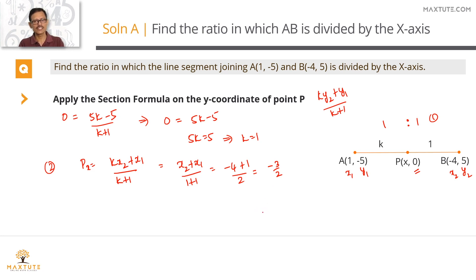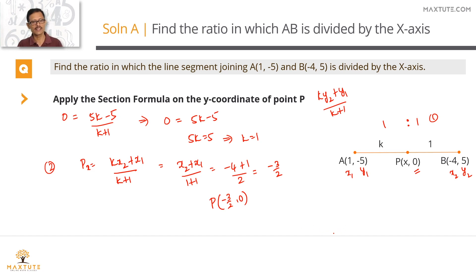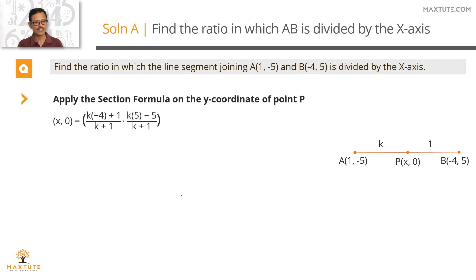Once we have the x-coordinate, the coordinates of point P are (-3/2, 0). So part two is also found. Part one: the x-axis divides this line in the ratio 1 is to 1. Part two: the coordinates of the point where it meets the line are (-3/2, 0).